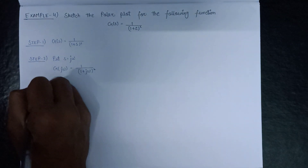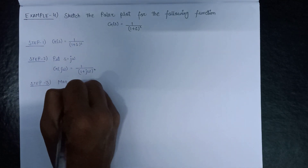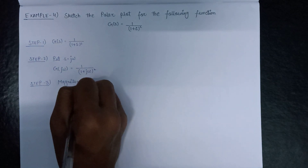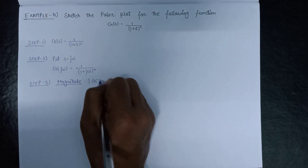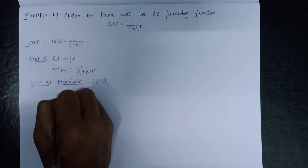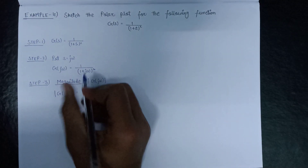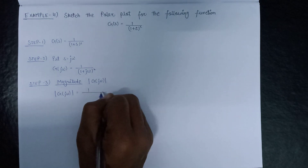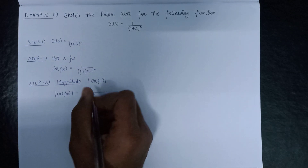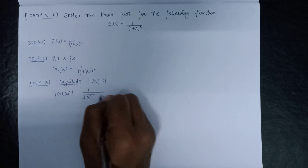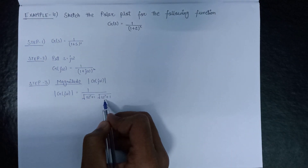Moving on to step 3, in which we will calculate the magnitude. The magnitude is represented as |G(jω)|, and |G(jω)| equals 1 over (ω² + 1), written as two terms because it is a whole square.